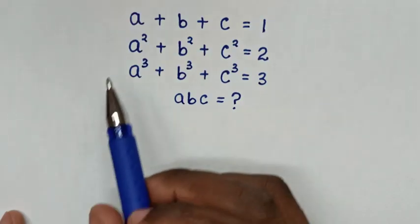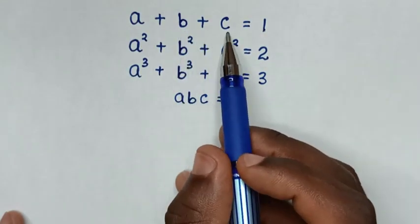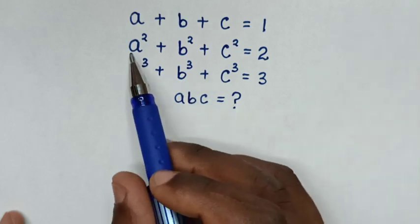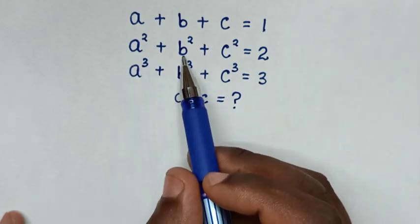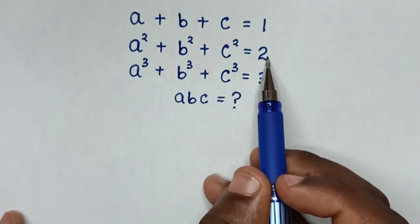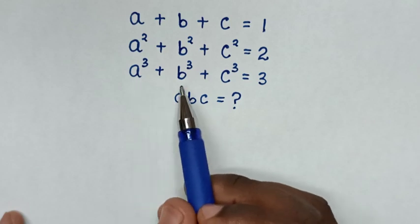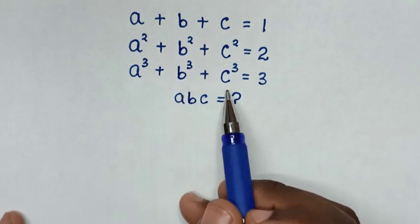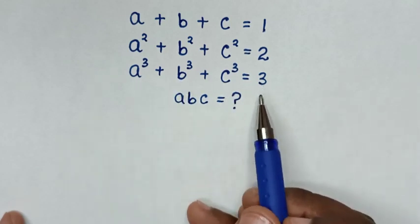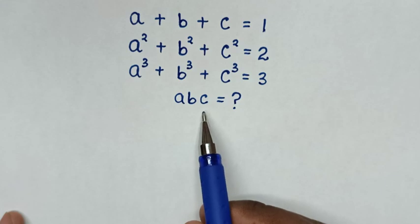Hello! How to solve: A plus B plus C equals 1; A squared plus B squared plus C squared equals 2; A cubed plus B cubed plus C cubed equals 3. We need to find the value of A, B, C.